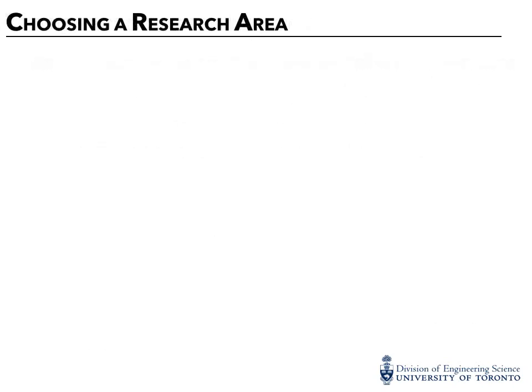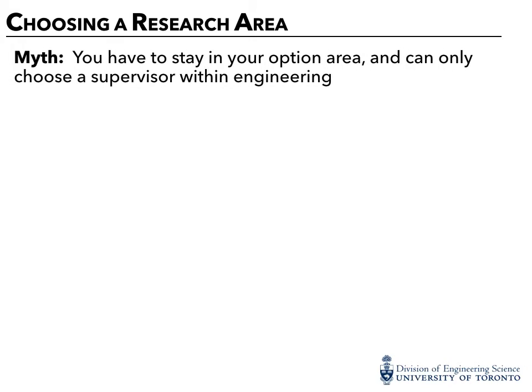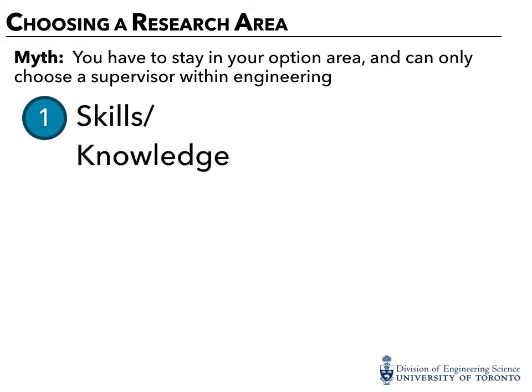Let's talk about choosing a research area. One of the major myths is that you have to stay within your own option area and can only choose a supervisor within engineering. When you're choosing a research area, you should really think about your skills and knowledge, which would relate to your option area and the area that you would have expertise in, and also areas which the university has expertise in.